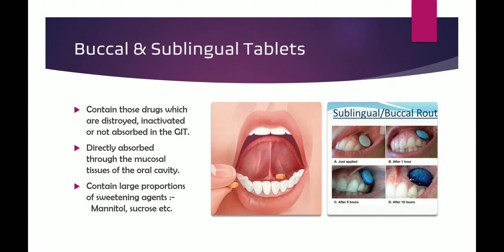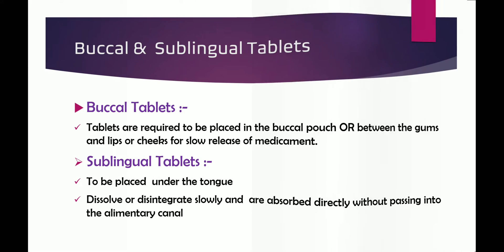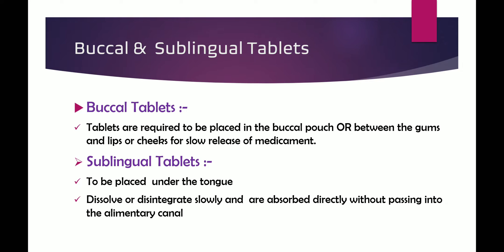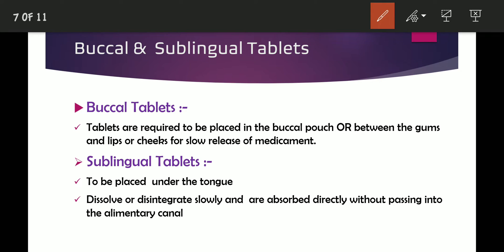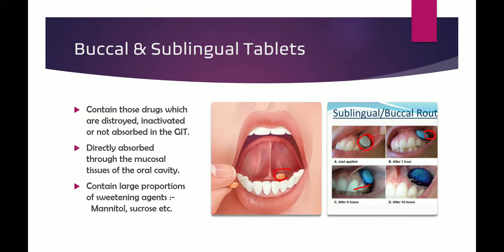The next type is buccal and sublingual tablets. Buccal tablets are placed in the buccal cavity — in the buccal pouch or between the gums and lips or cheeks — for slow release of the medicament. Sublingual tablets are placed beneath the tongue. In both cases, the tablets dissolve or disintegrate very slowly and are absorbed directly through the mucosal tissues of the oral cavity, without passing through the alimentary canal.